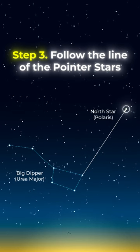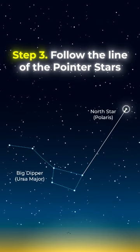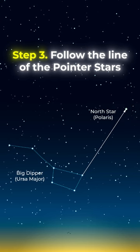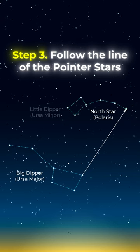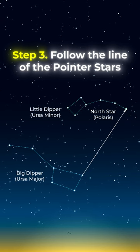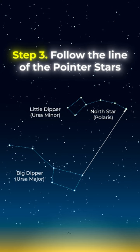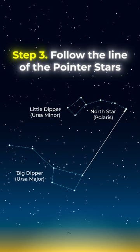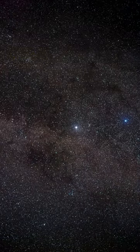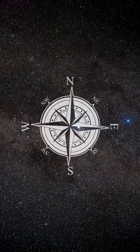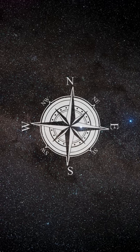You'll find the north star, which is also at the end of another group of stars called the little dipper. Once you find the north star, you'll know you are facing north. It's like a secret code in the sky to help you know your direction.